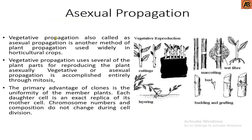Now we will learn about asexual propagation. Vegetative propagation, also called asexual propagation, is another method of plant propagation used in horticultural crops. It uses several plant parts for reproducing the plant asexually. Asexual propagation is accomplished entirely through mitosis. The primary advantage of clones is the uniformity of the member plants — each daughter cell is an exact replica of its mother cell, and chromosome numbers and composition do not change during cell division. Here we can see a figure of asexual propagation such as cutting, layering, microcutting, budding, grafting, and many more.